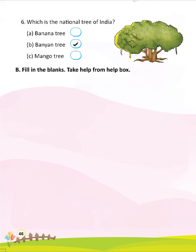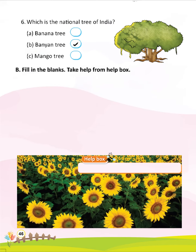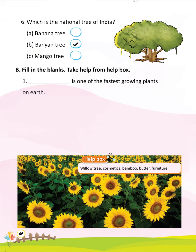Fill in the blanks. Take help from the help box. Help box: Willow tree, Cosmetics, Bamboo, Butter, Furniture. Question 1: Dash is one of the fastest growing plants on earth — Bamboo.